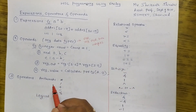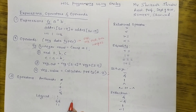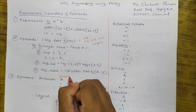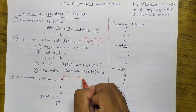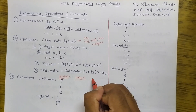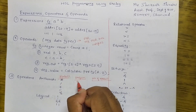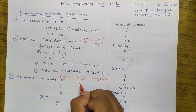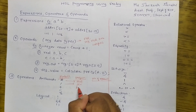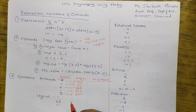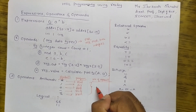Now coming to operators — we have many different kinds and we can classify them in many different types. The first type is the arithmetic operator. The star symbol performs multiplication, slash is division, plus is addition, minus is subtraction, and percent is the modulo operator which gives you a remainder. For all of these, the number of operands needed is two.